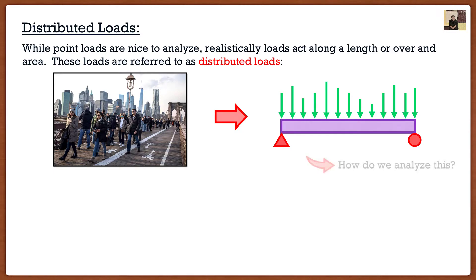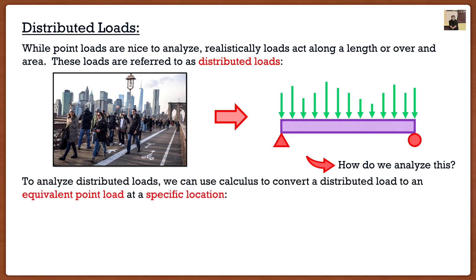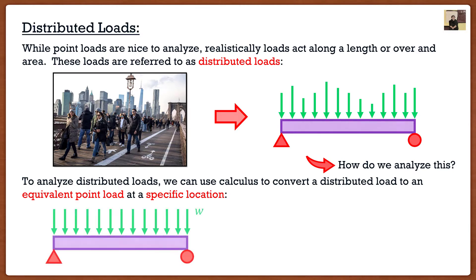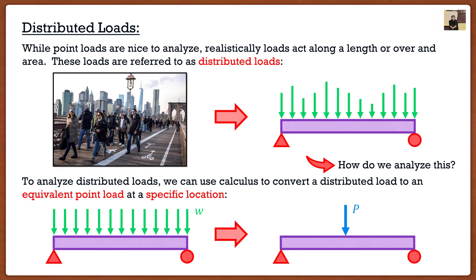The question is, how exactly do we analyze this? If we had point loads, we know exactly what to do. But what do we do with distributed loads? Well, we're going to do something very simple — every distributed load can be replaced with one point load at a specific location. So if I have a uniformly distributed load, I can convert it into an equivalent point load located at a very specific distance from the edge.